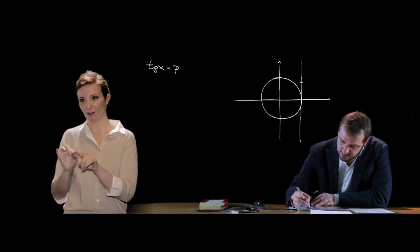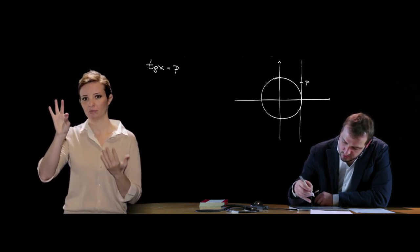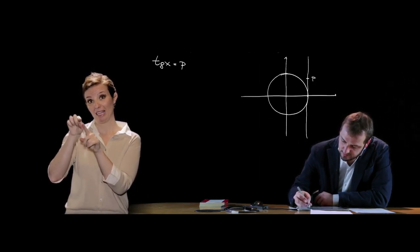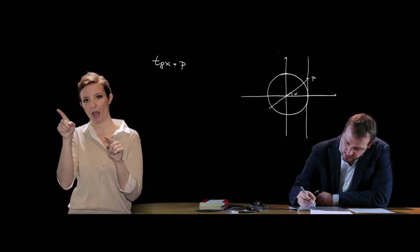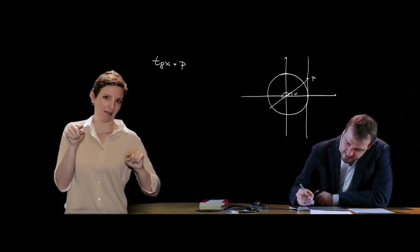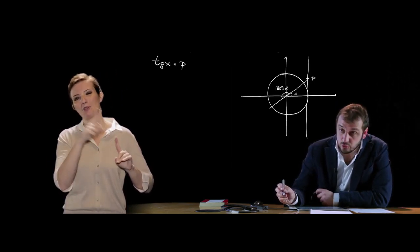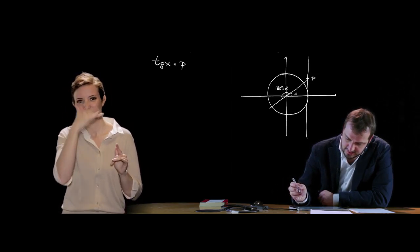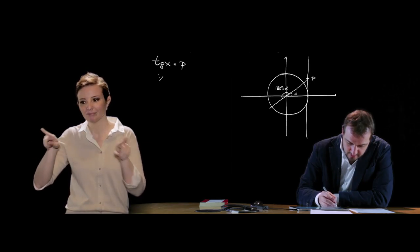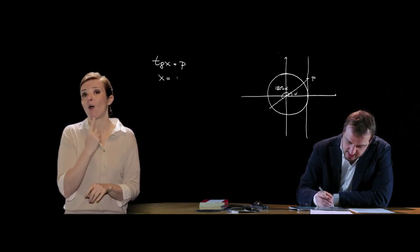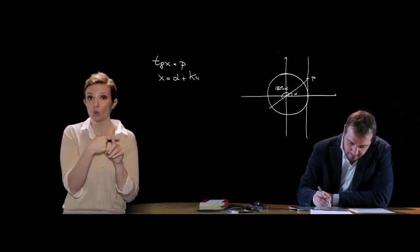Abbiamo il valore di p: a questo valore di tangente corrispondono due angoli, α e 180° + α. Questo è ovvio perché il periodo della tangente è 180°. L'unica soluzione si può sintetizzare come x = α + kπ, che comprende contemporaneamente sia α che 180° + α.